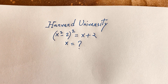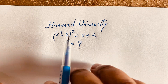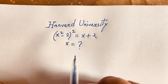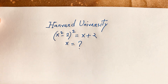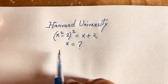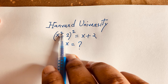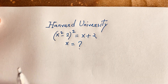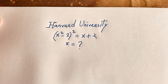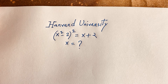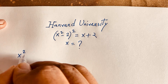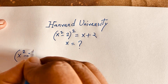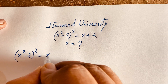Hello everyone. In this video we have solved this interesting exponential equation: (x² - 2)² = x + 2. How to solve this exponential equation? We can see it is x to the power 2, whole to the power 2, so it will be x to the power 4. We will find 4 answers. Our question is: (x² - 2)² = x + 2.